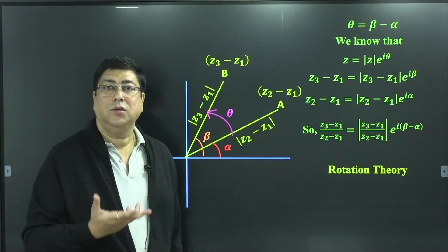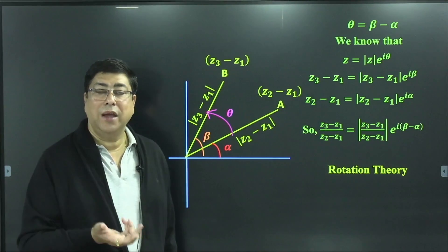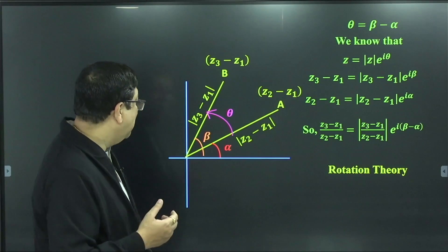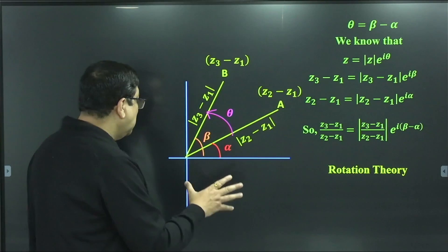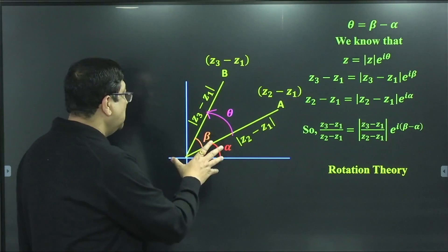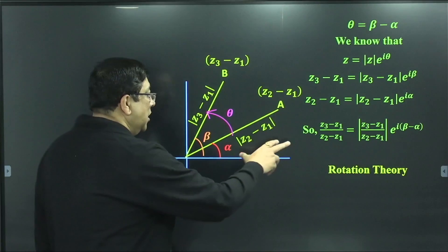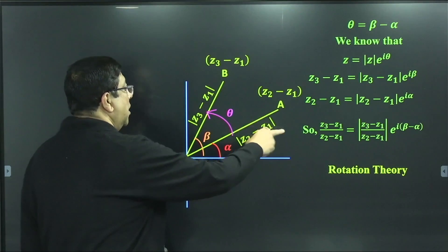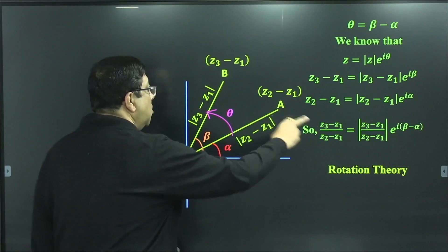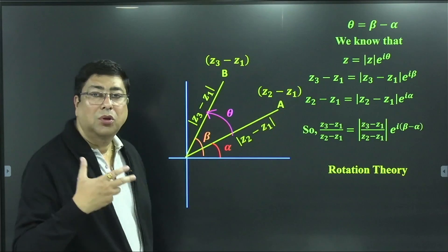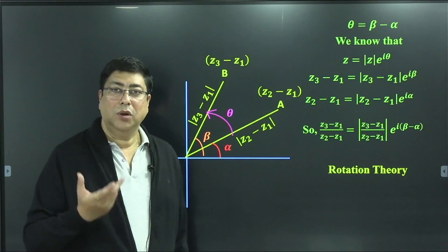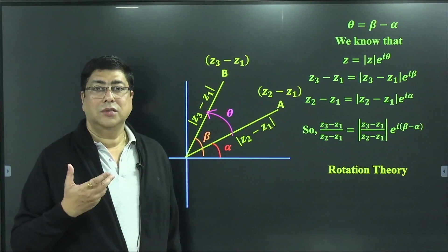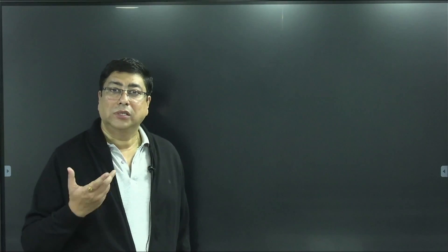Why is it called the rotation theory? The reason is that it seems as if with respect to Z1, the point Z2 is rotated to the new position Z3. That is why this is called the rotation theory. Let us now apply this concept to solve some problems of the type coming in entrance examinations.